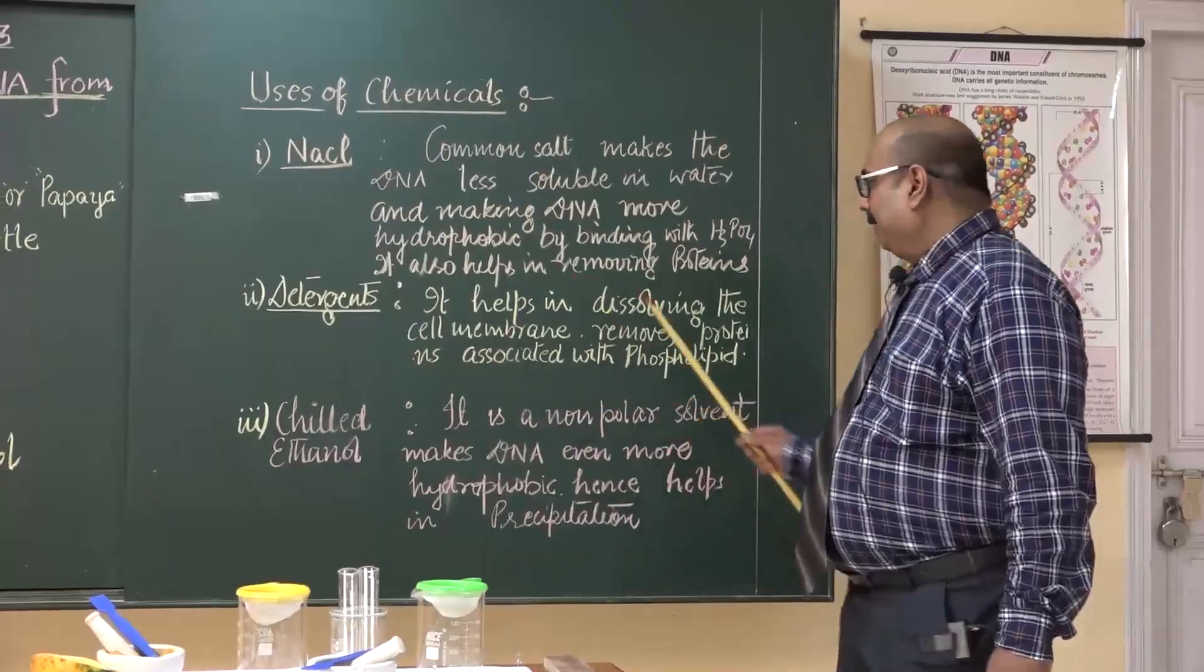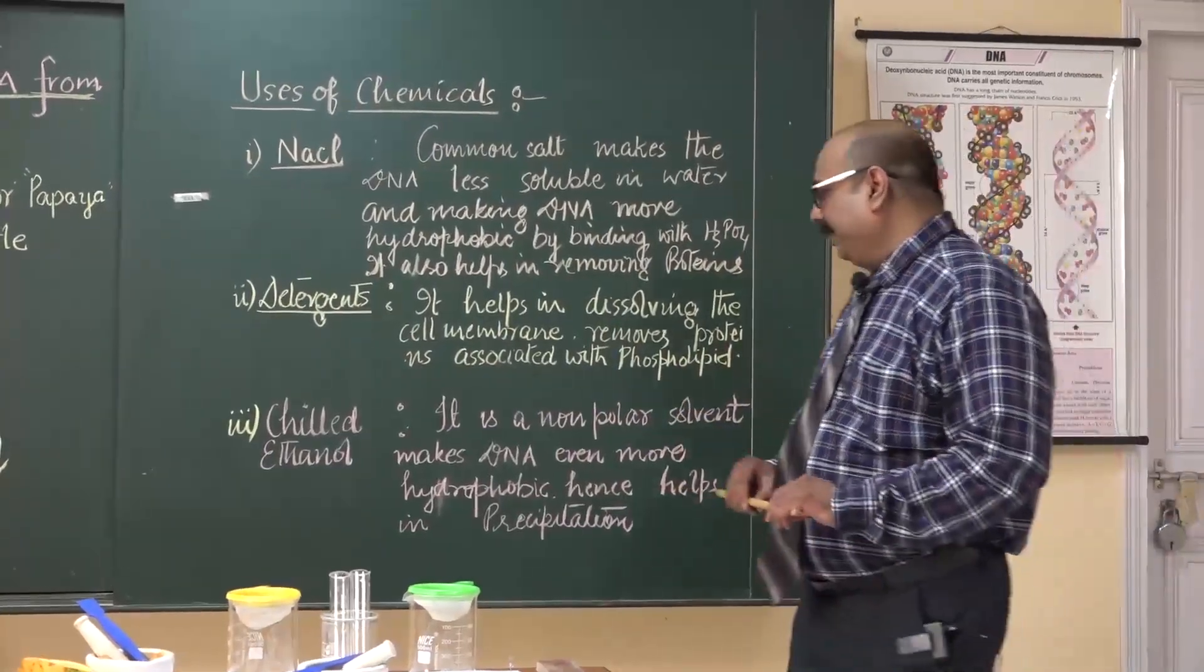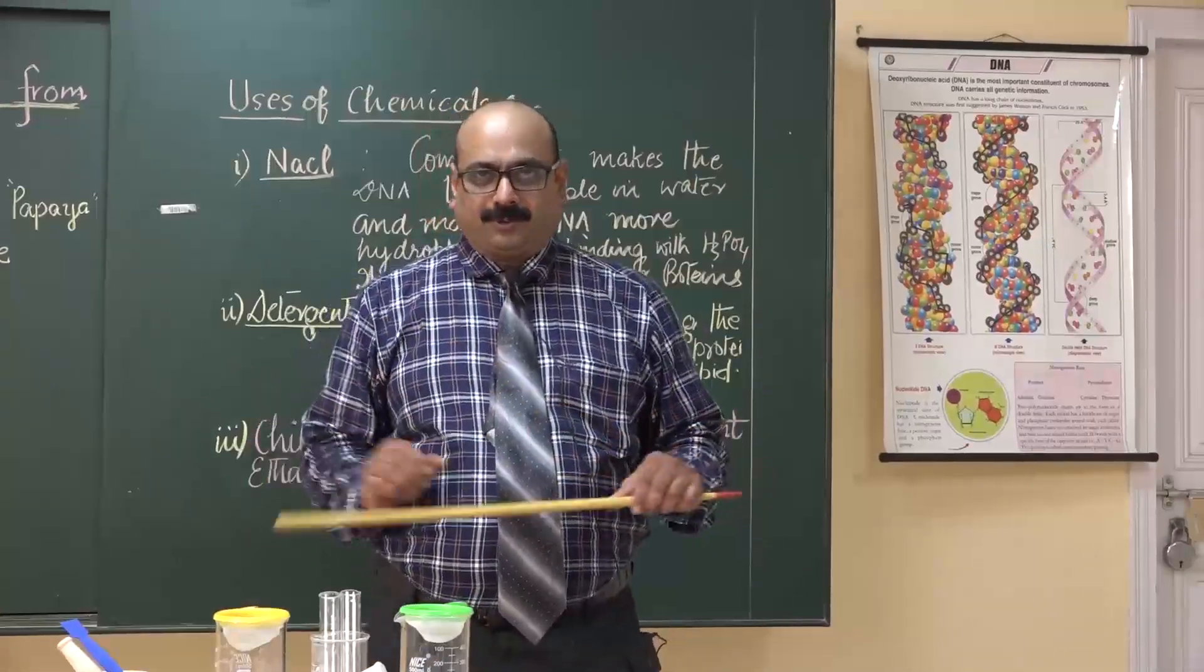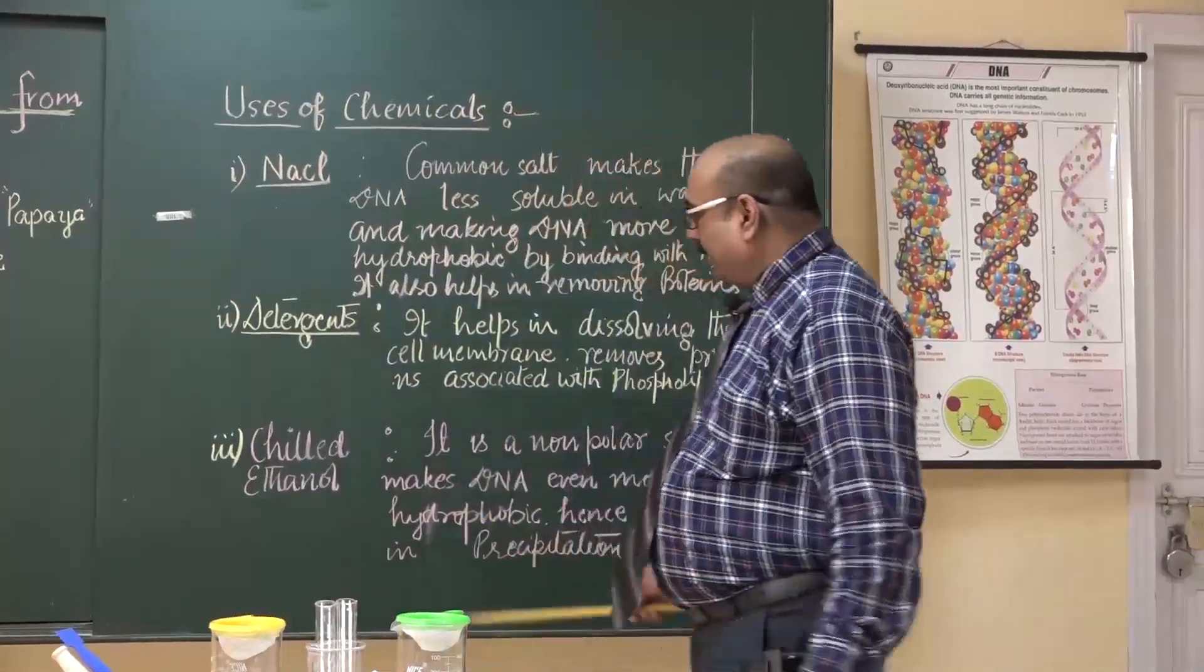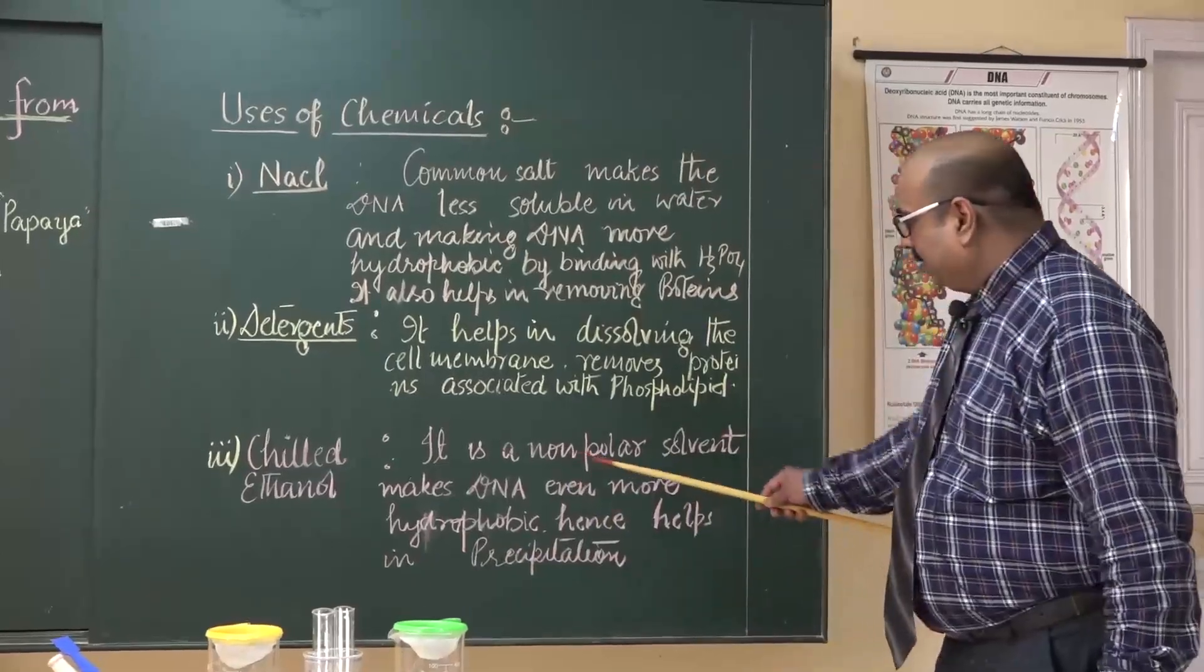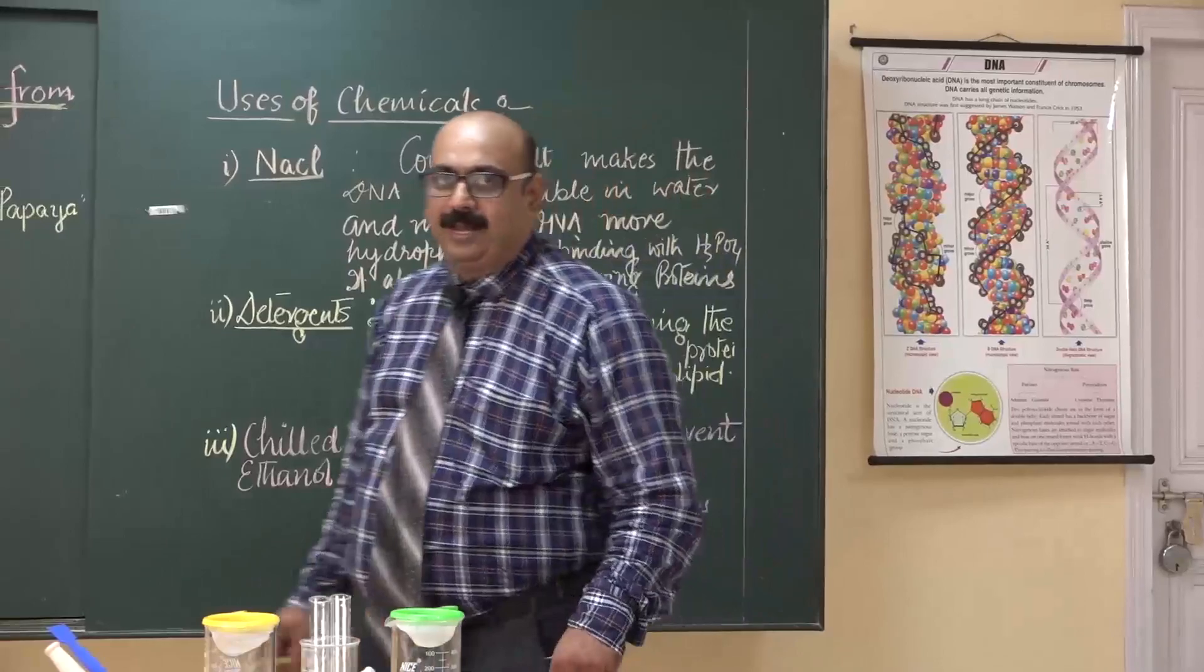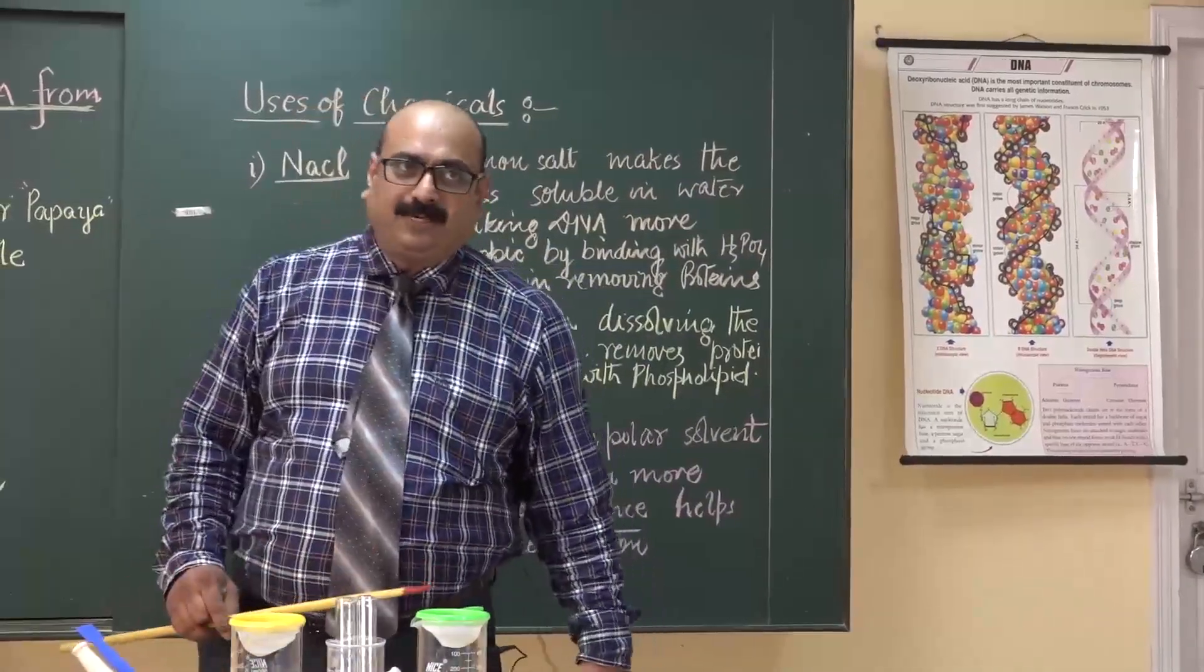Detergent helps in dissolving cell membrane, removes the protein in between the phospholipids. Chilled ethanol is a non-polar solvent, makes DNA even more hydrophobic so that it can precipitate well.